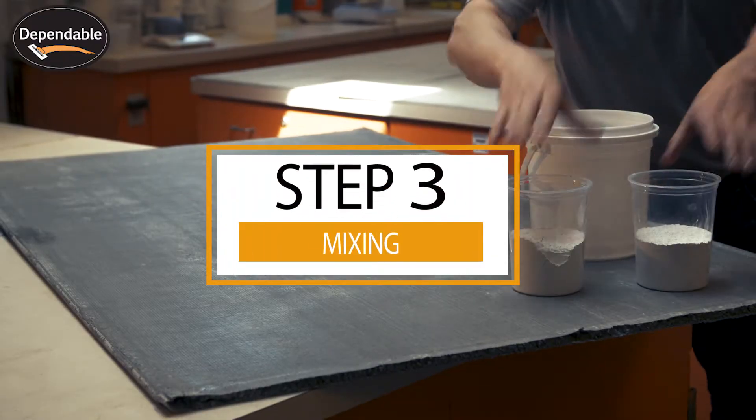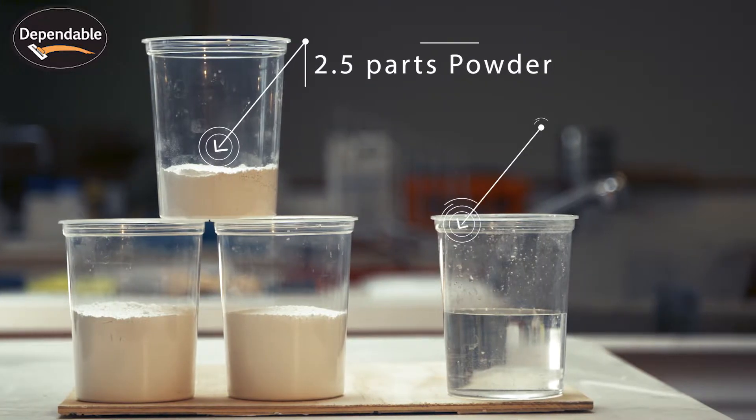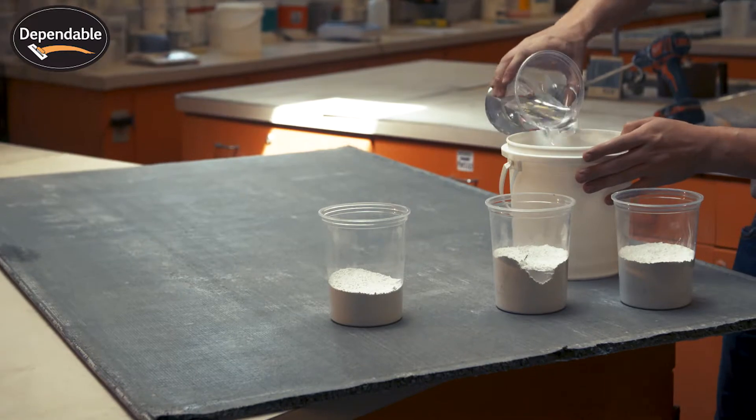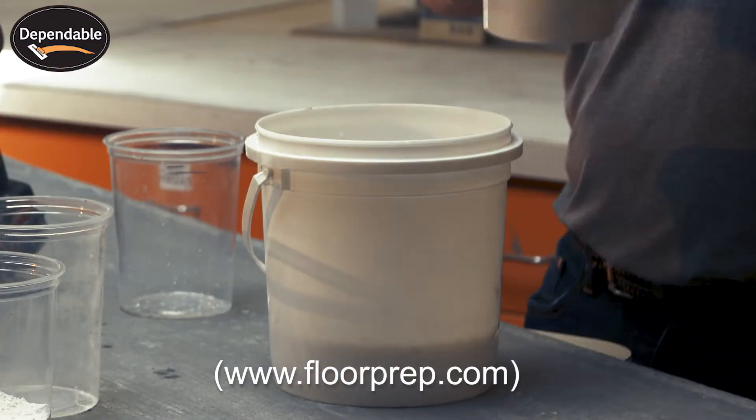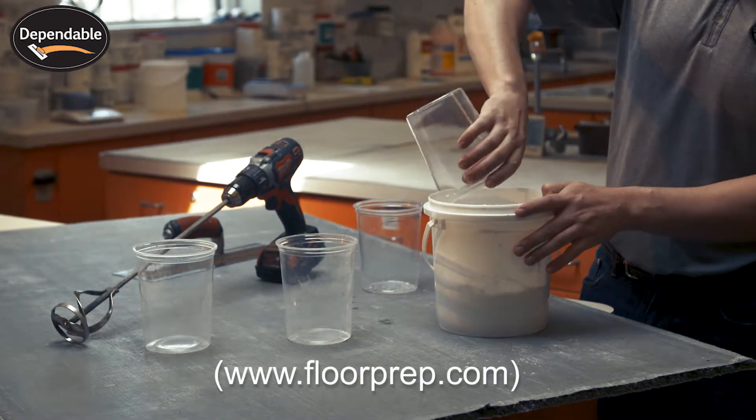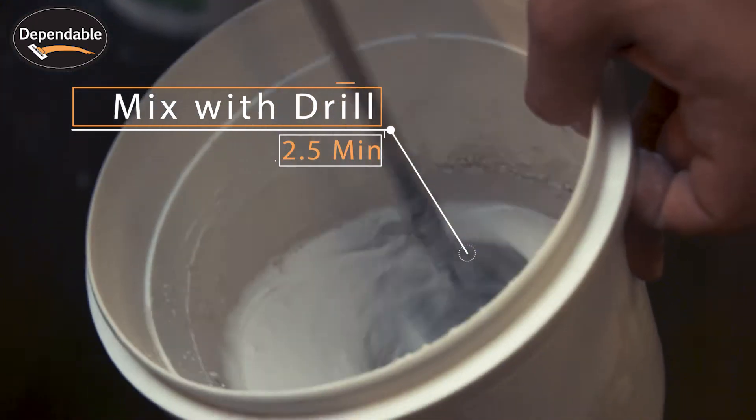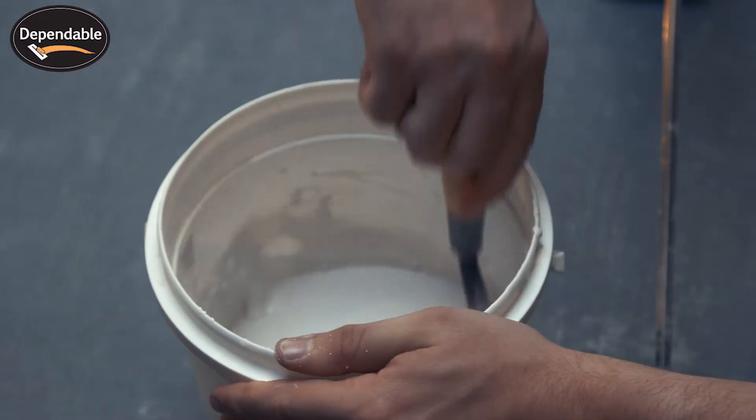Step 3: Mixing. Mix Polyskim approximately 2 and a half parts powder to 1 part water by volume. Consult the Polyskim technical data sheet when mixing full bags and full mixing instructions. Mix the product to a lump-free consistency for 2 and a half minutes. Be sure to scrape your mixing vessel to eliminate any residue on the walls.